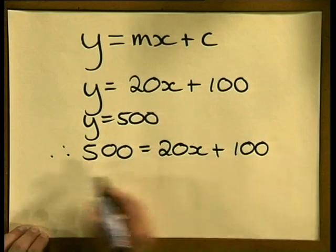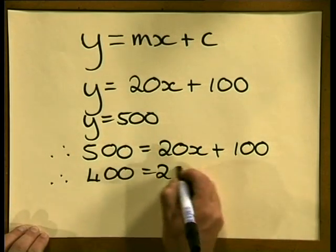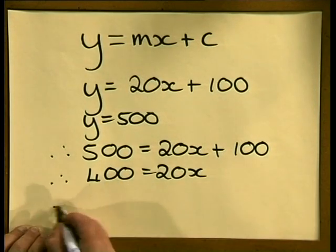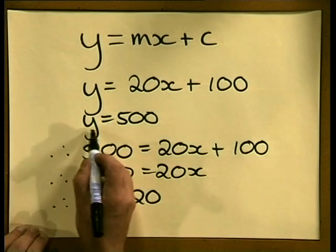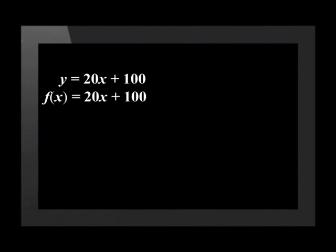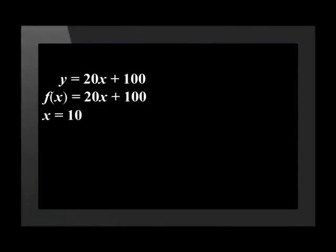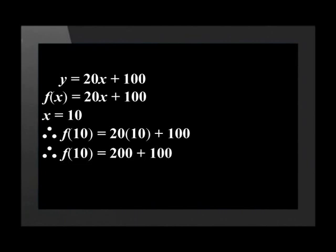Solving for x, I'm going to subtract 100 from both sides of the equation. Therefore 400 = 20x, and since 20 times 20 equals 400, x = 20. So after 20 deposits into the bank account, the total will be 500 Rand. Let's use the same equation and rewrite it in functional notation, replacing the output variable y with f(x). Using this equation to determine how much money would be accumulated after 10 deposits, x = 10. So 20 times 10 plus 100 equals 200 plus 100, which is a total of 300. Therefore, after 10 deposits, the total in the bank will be 300 Rand.